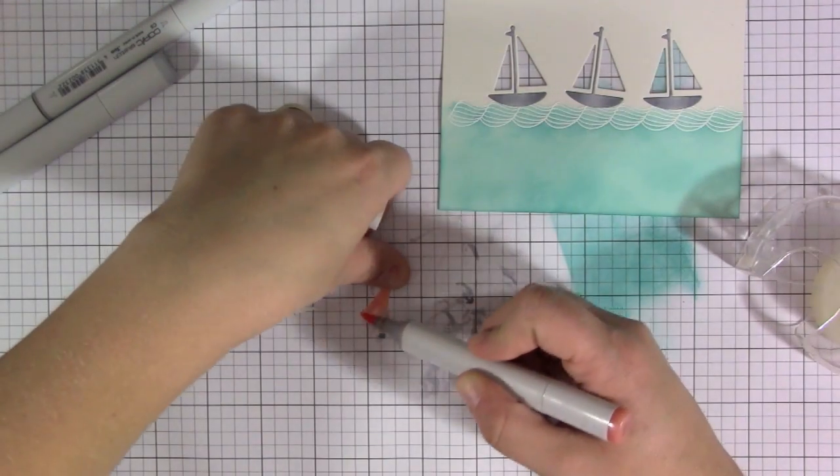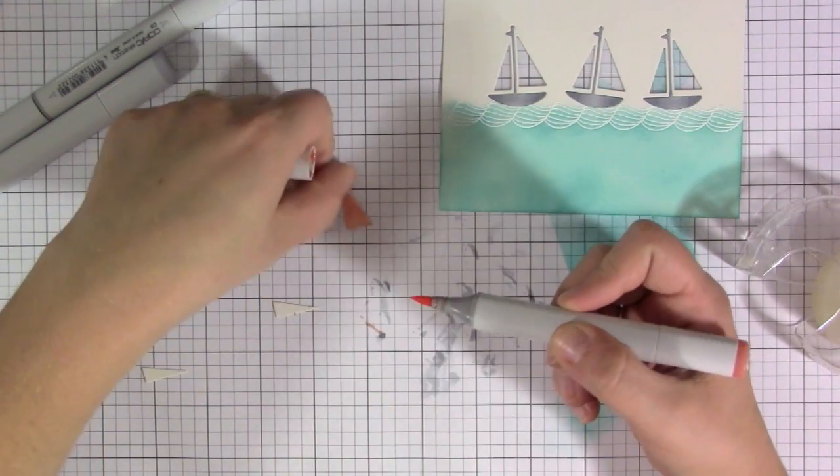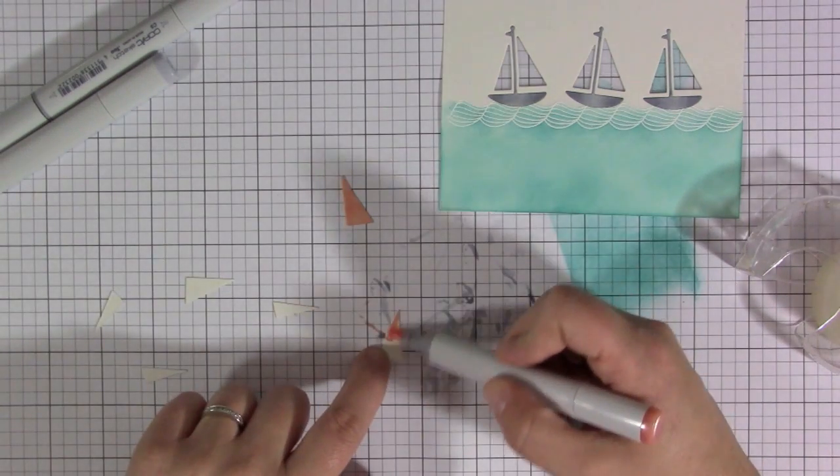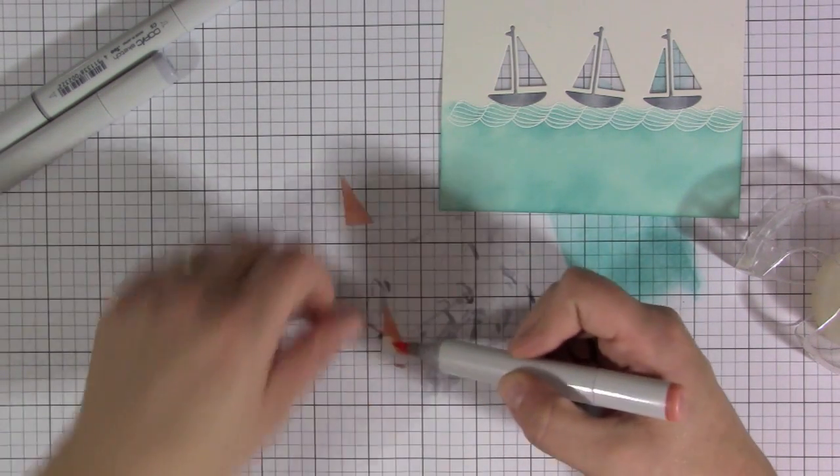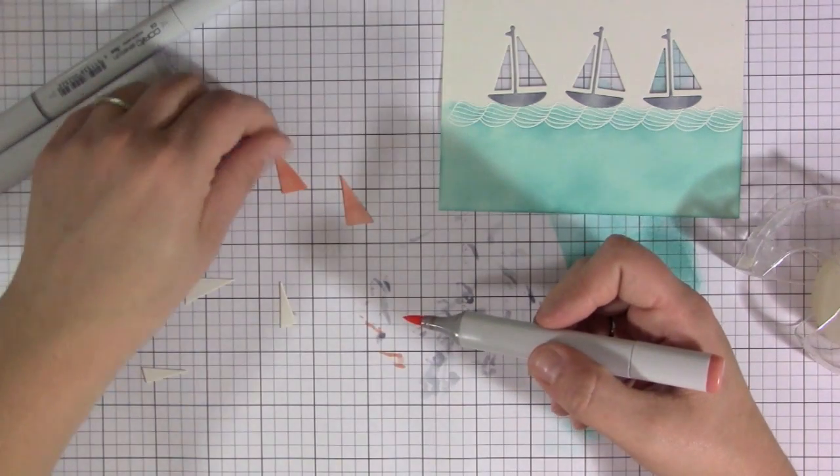Like I said when I did the embossing, you can kind of see now that it looks like the boats are in the waves. This was just a way that I thought would make it look even more realistic and like they were floating around in the water.